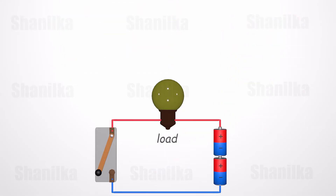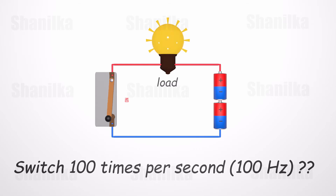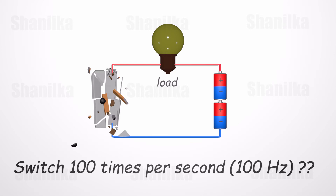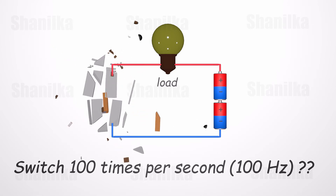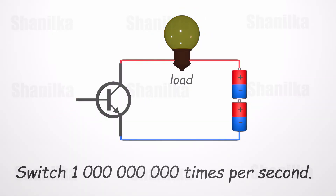Can you turn on and off a mechanical switch 100 times per second? Even if we manage to do that, how long will it last at such speed? We can switch transistors more than 1 billion times per second.